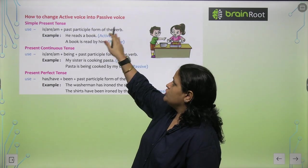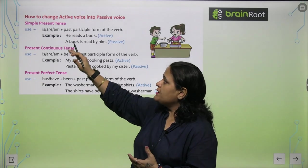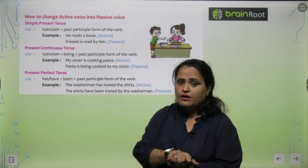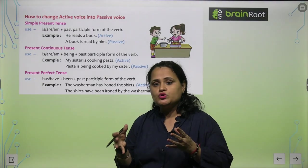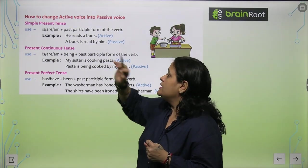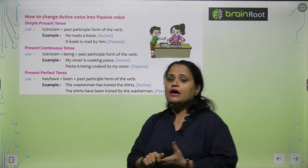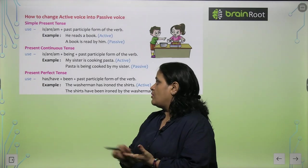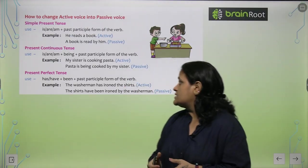How to change Active Voice into Passive Voice: Simple Present tense mein is/am/are plus Past Participle of the verb use karenge. For example, 'He reads a book' becomes 'A book is read by him.' Present Continuous mein is/am/are being plus Past Participle — 'My sister is cooking pasta' becomes 'Pasta is being cooked by my sister.'